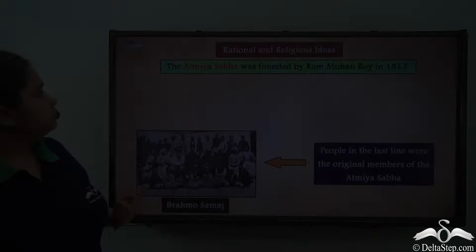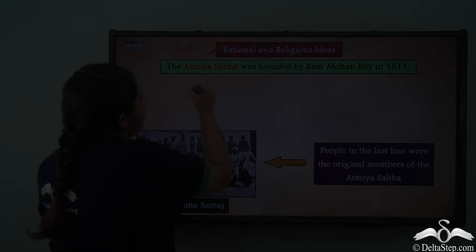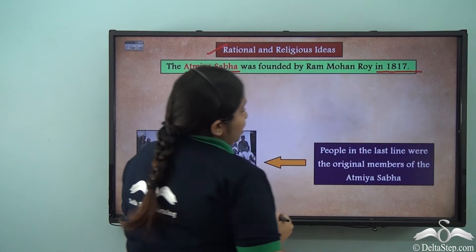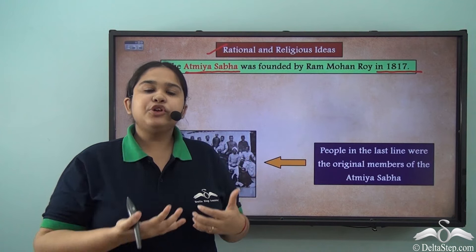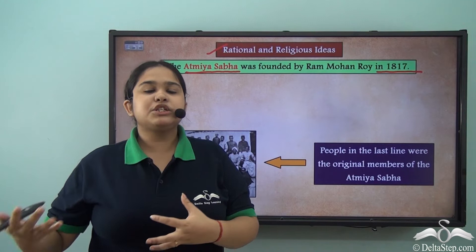Raja Ram Mohan Roy went ahead with his rational and religious ideas when he established the Atmiya Sabha. He basically wanted to establish an organization that would give place to open-minded ideas rather than the orthodox practices that were followed in the name of religion.